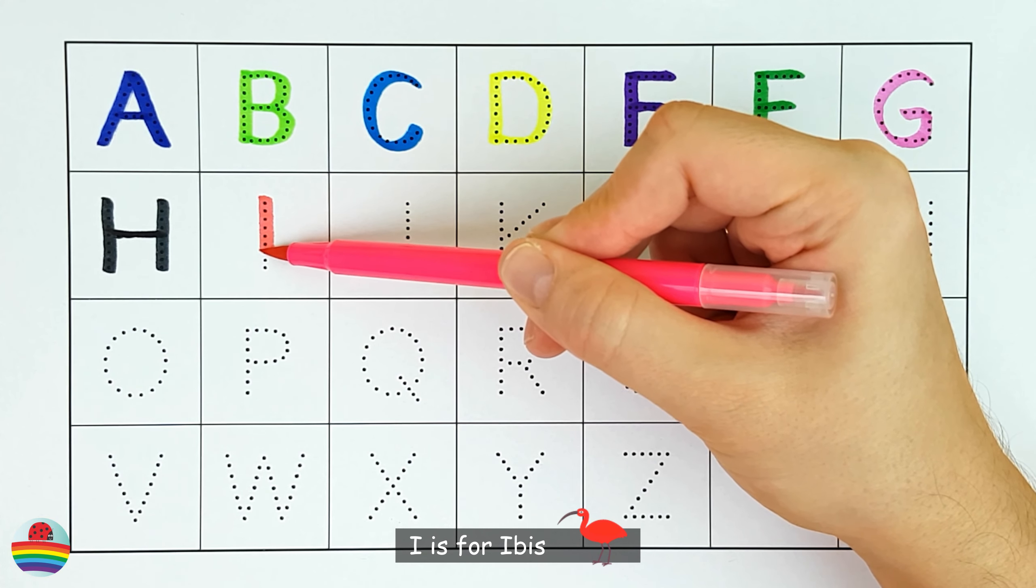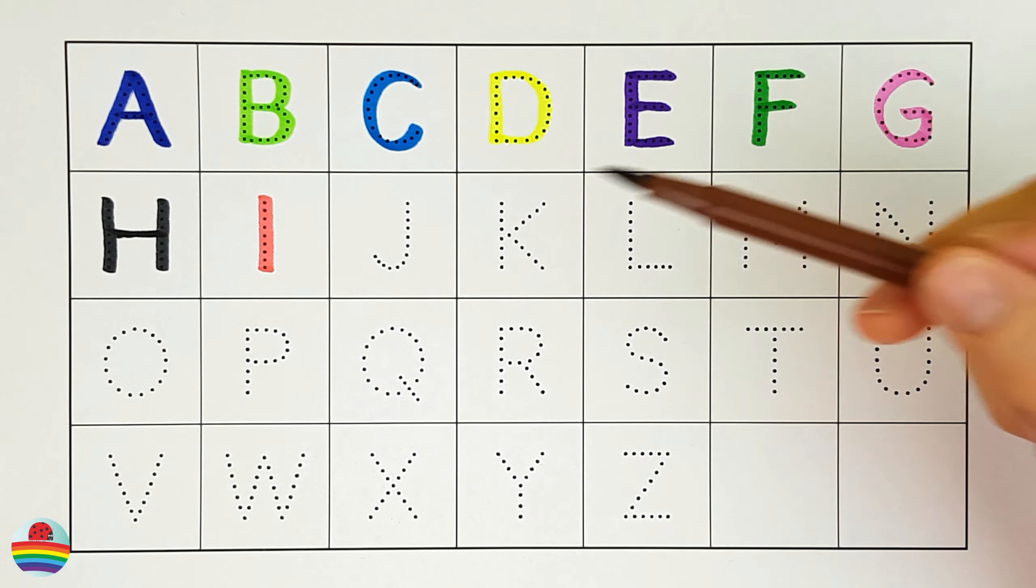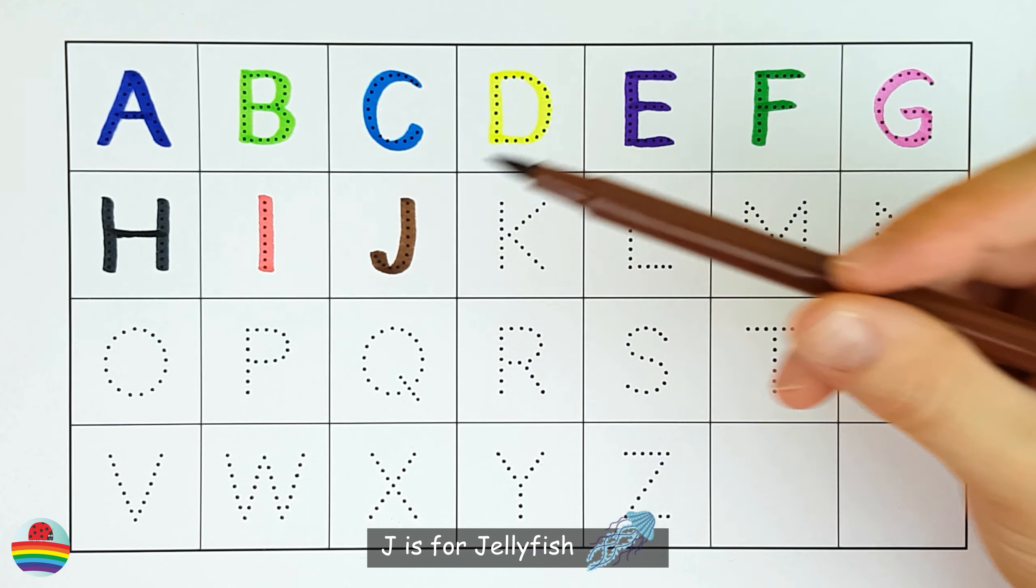I. I is for ibis. I. J. J is for jellyfish. J.